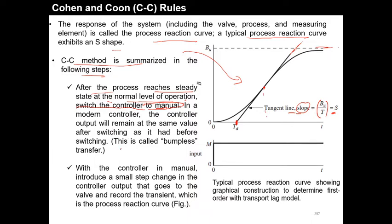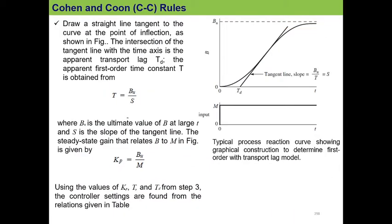In a modern controller, the controller output will remain at the same value after switching as it had before switching. With the controller in manual, introduce a small step change of amplitude m to the controller output that goes to the valve, and record the process reaction curve. Once the reaction is achieved, you can find out the time delay td. Draw the tangent to the curve at the point of inflection — the intersection of the tangent line with the time axis gives the apparent transport lag td.